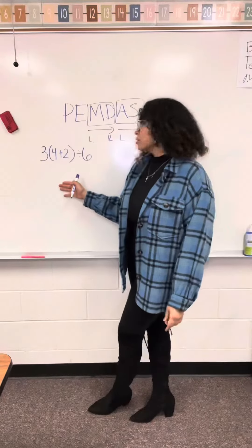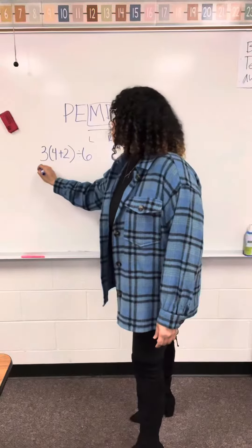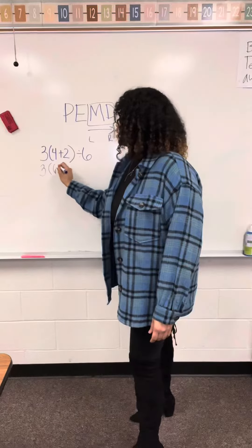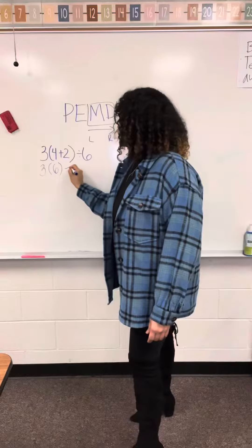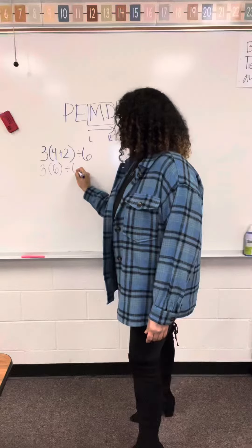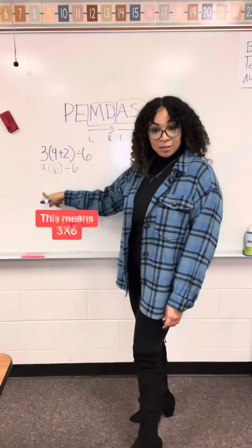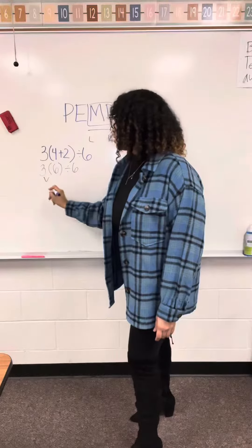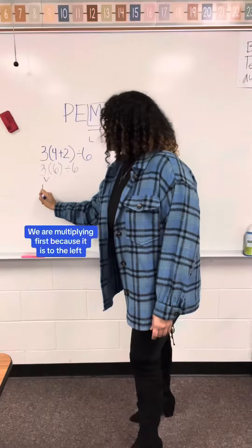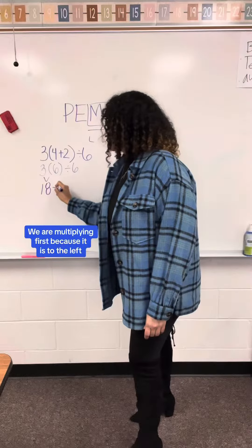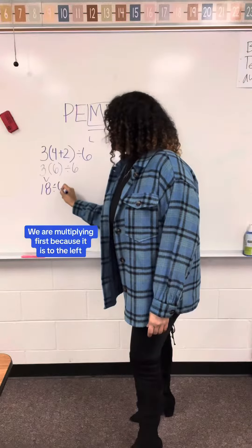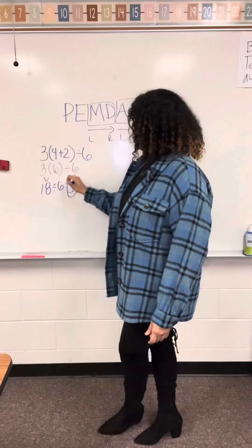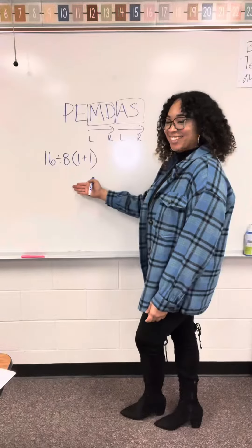We go left to right, y'all. So let's start off with this problem here. We're going to do parentheses first — we got 3 times 6 divided by 6. When a number is next to parentheses, that is multiplication. And in this example, we're going to multiply first because multiplication is to the left, not because M comes before D in PEMDAS. 18 divided by 6, and then we get 3.